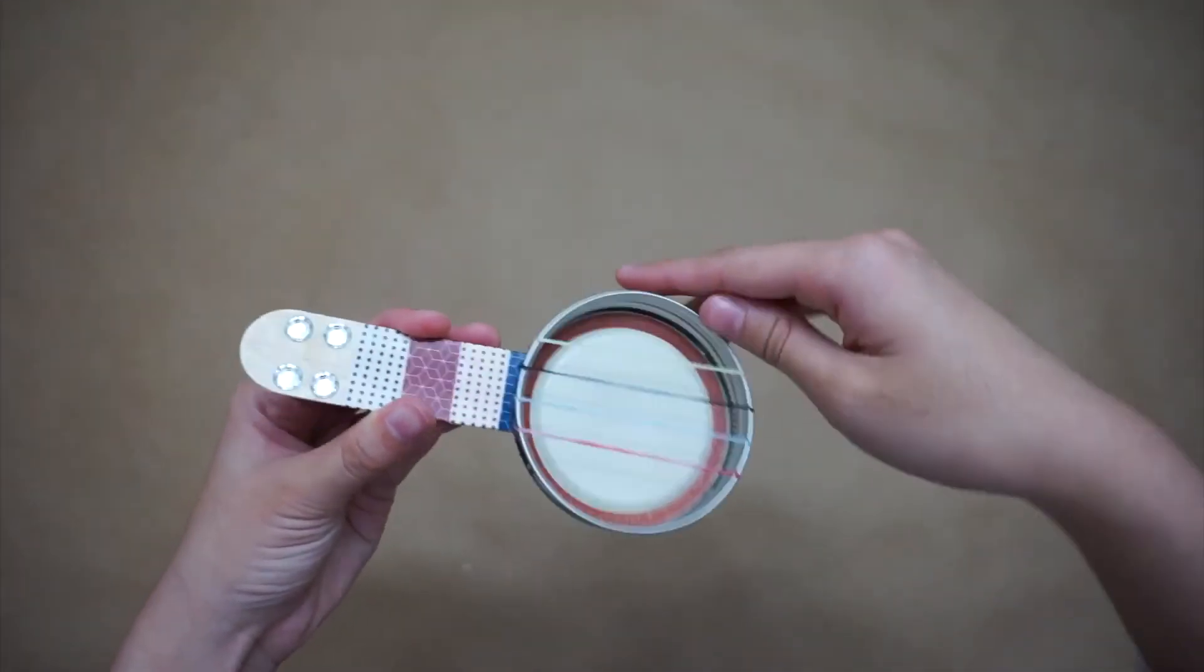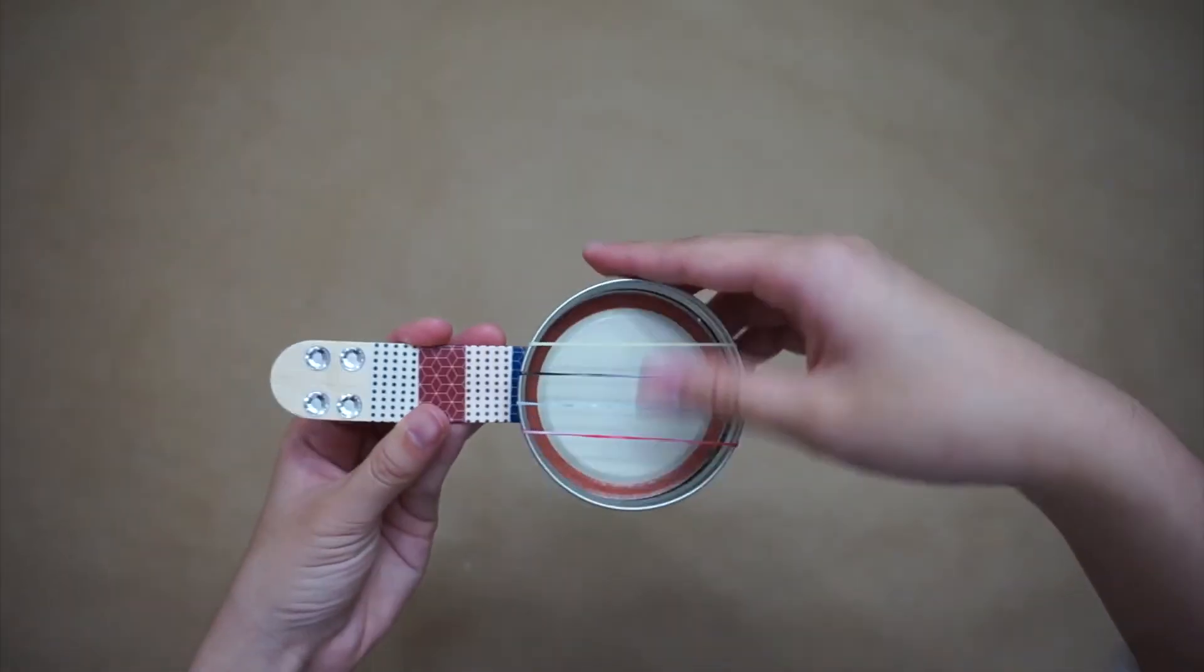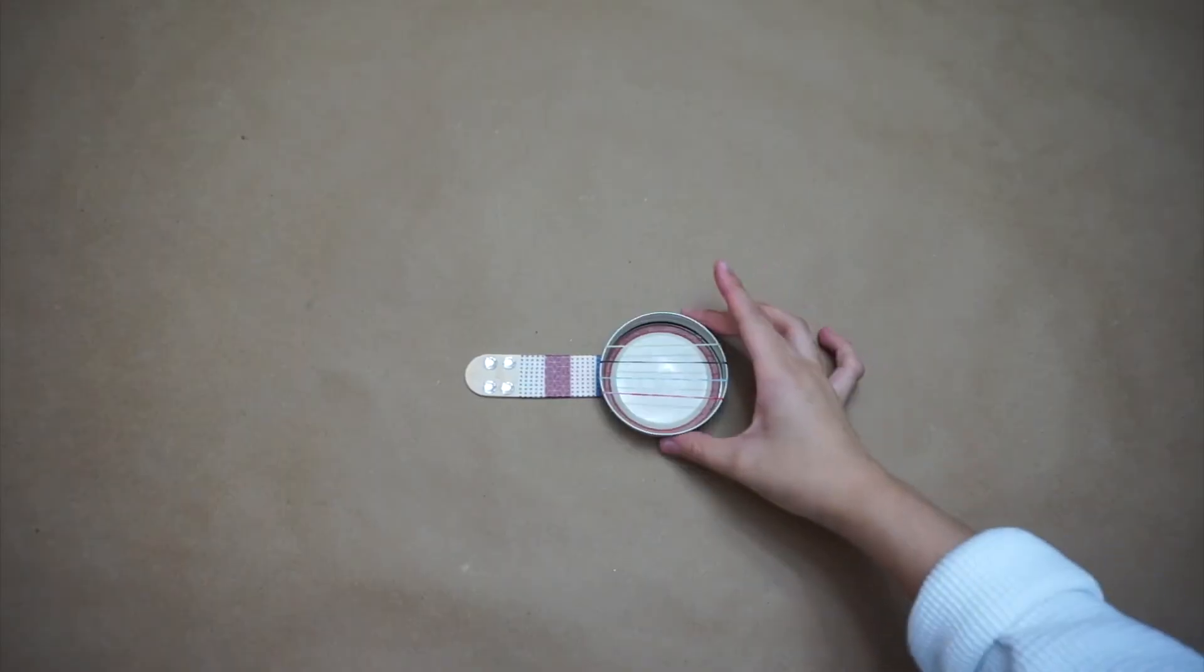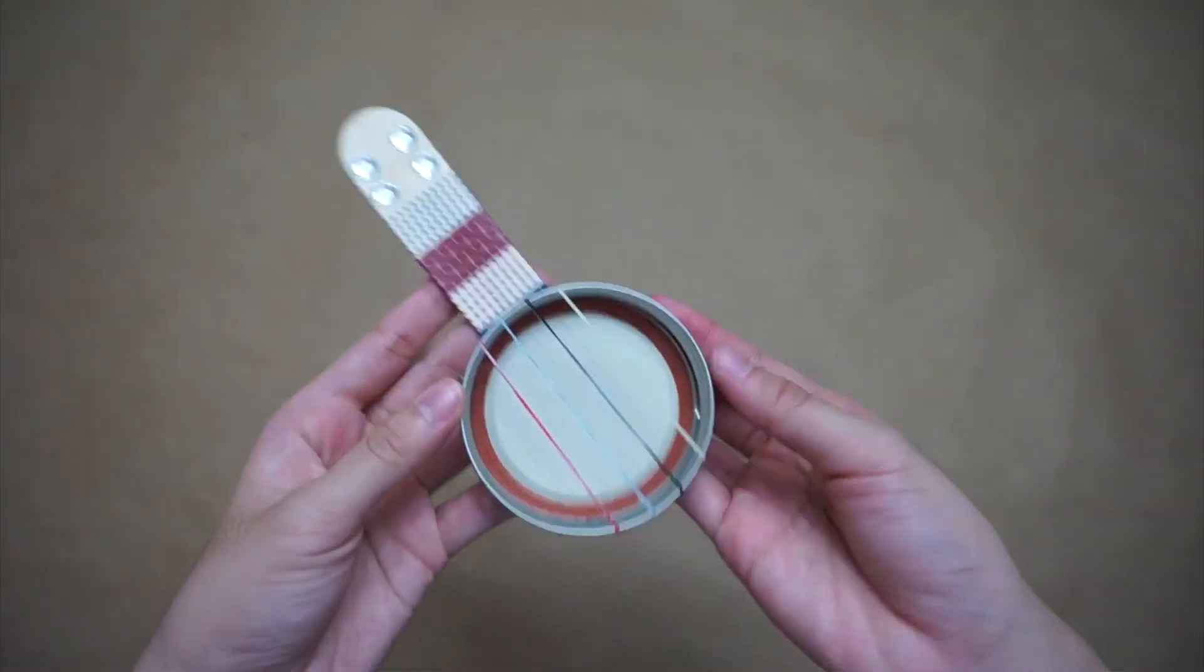And there you have it, a mini banjo. My favorite thing about this craft is how you could strum the loom bands like you would on an actual banjo.